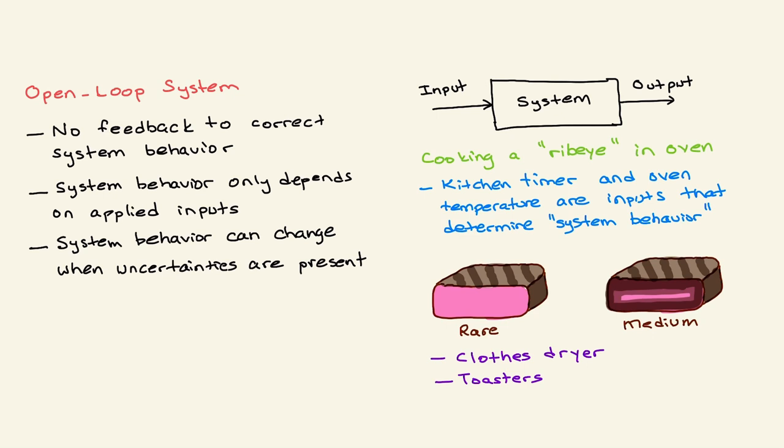In this case, system behavior can change when uncertainties are present. For example, let's say your oven temperature sensor changed. You adjust it to 350 Fahrenheit, but it is actually measuring 400, so you will get a different input. Same for like toaster - you set your timer in the room temperature versus in a much colder or hotter environment. The output of your bread will be different.